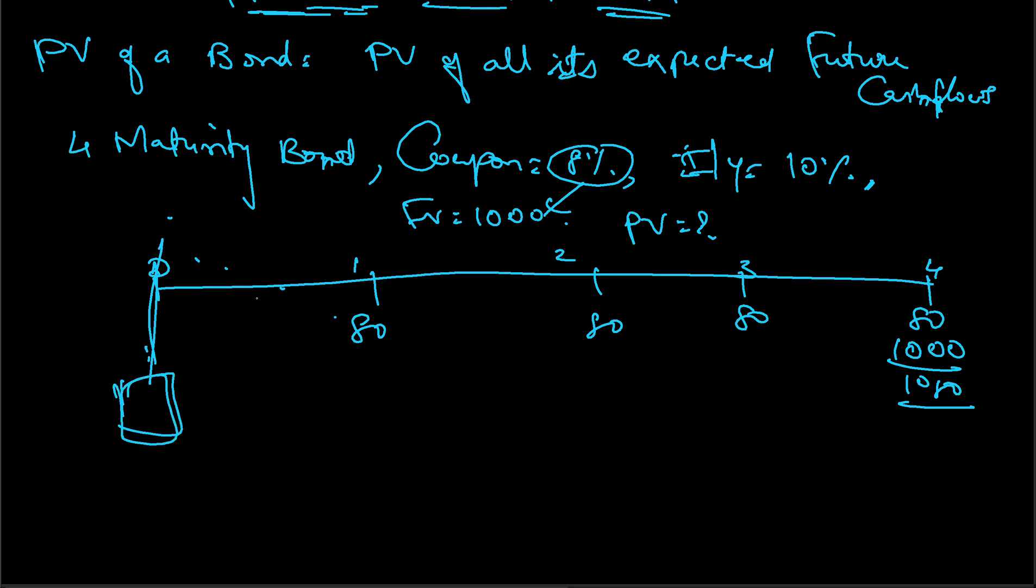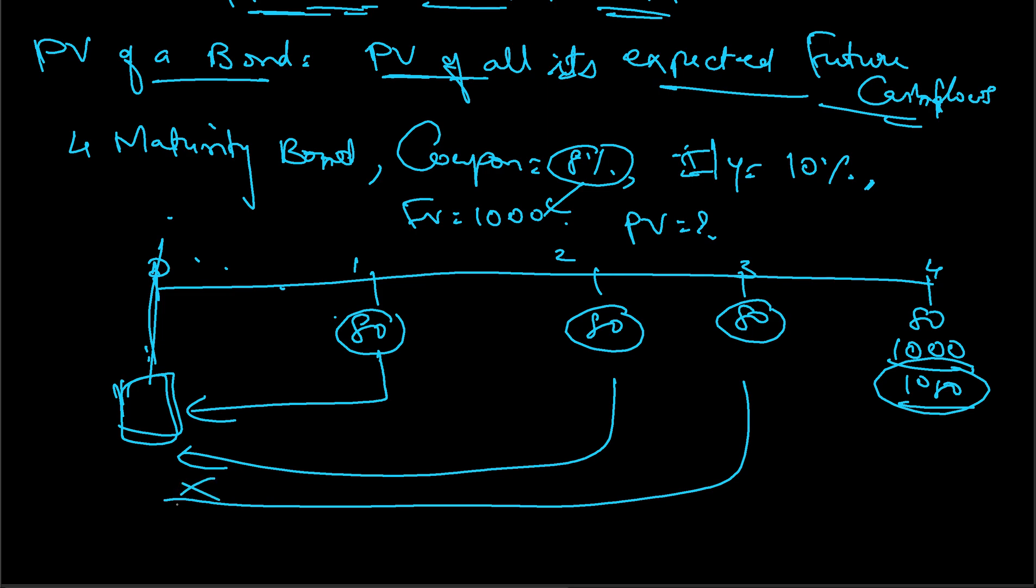How do I find out the present value? As the statement says, present value of a bond is equal to present value of all its expected future cash flows. These are all the expected future cash flows, so I need to discount them and bring them to the present value.